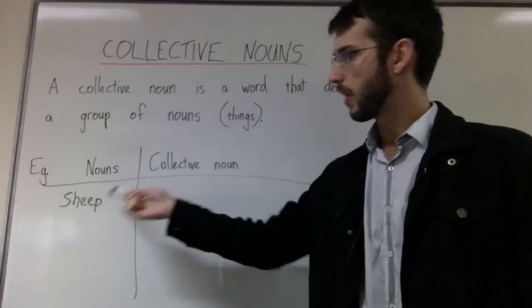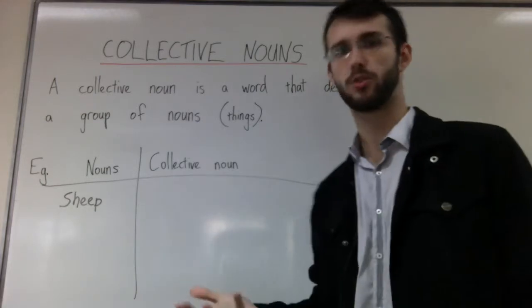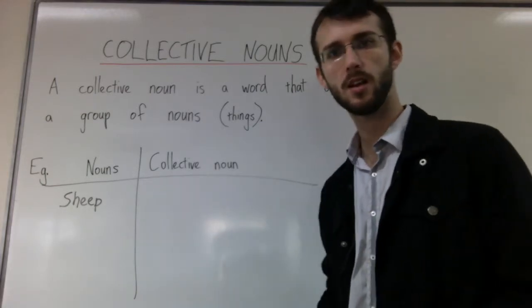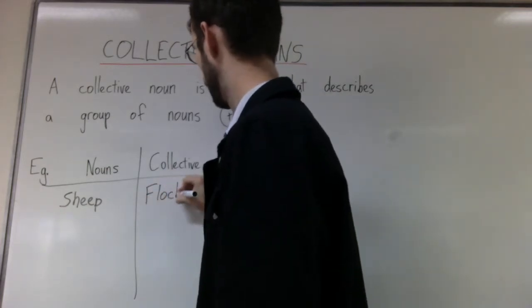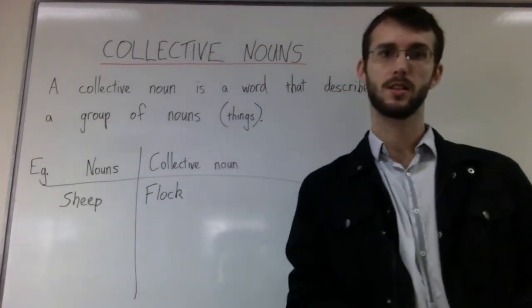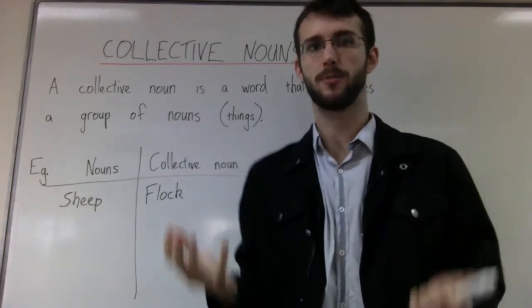If we've got one sheep, then it's a sheep. If we've got several sheep, then what's it called? It's called a flock of sheep. So one sheep is one sheep. A group of sheep is a flock of sheep.